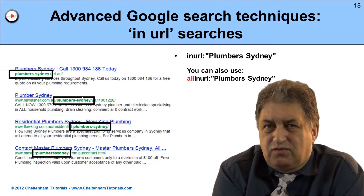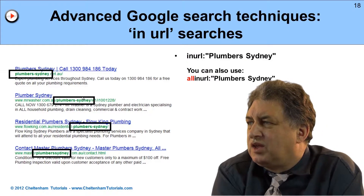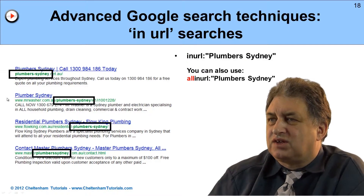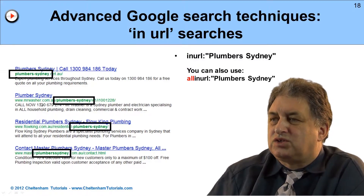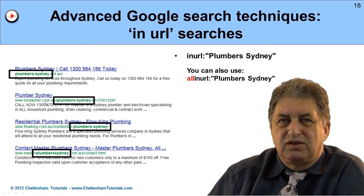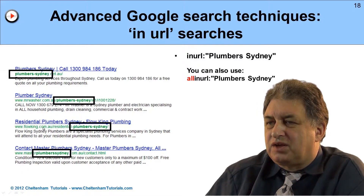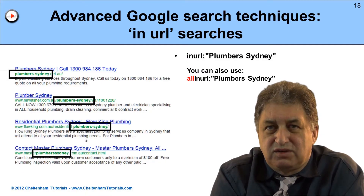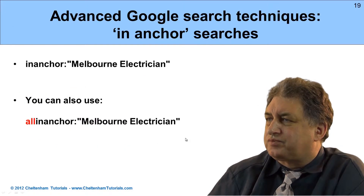Another thing you can do is search within the URL of a website. For instance, to research plumbers in Sydney, type 'inurl:' followed by 'plumbers sydney' - optionally in inverted commas. As you can see, results come back as plumberssydney.net.au and websites with 'plumbers sydney' within a subdirectory. Remember, the URL is just the web address, and subdirectory names form the entire URL. This is a great research tool to find websites related to your product or service.